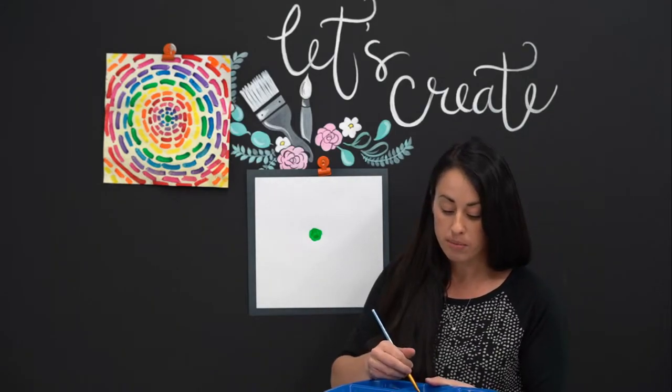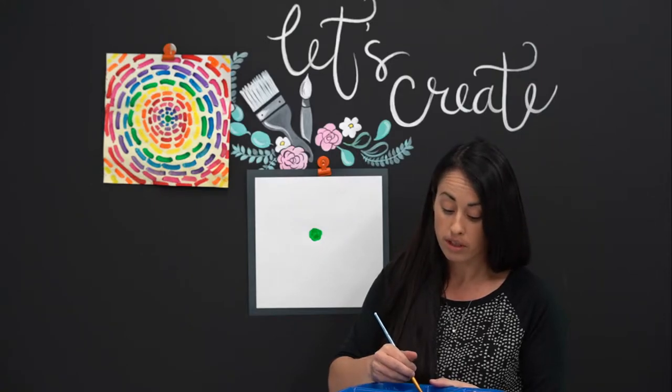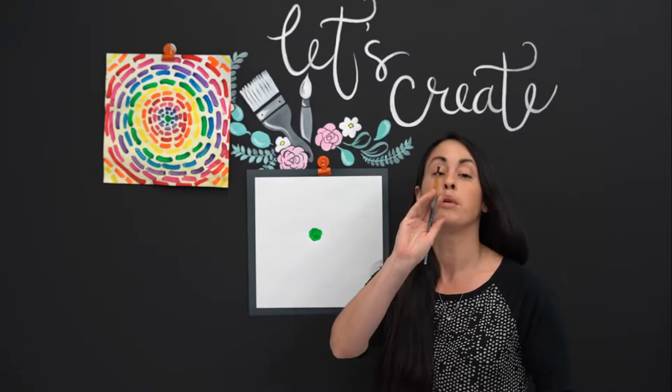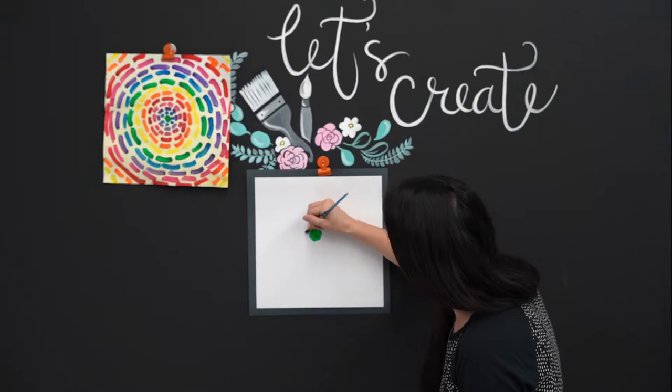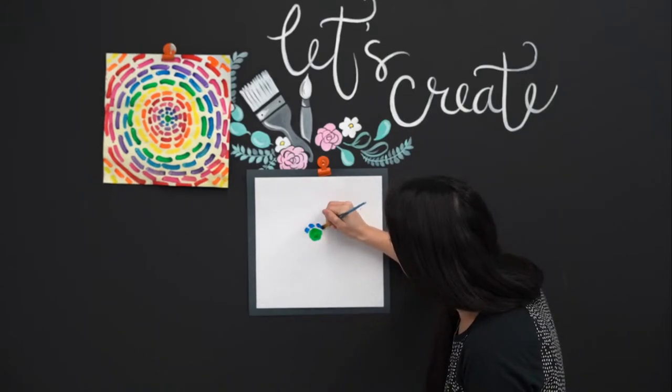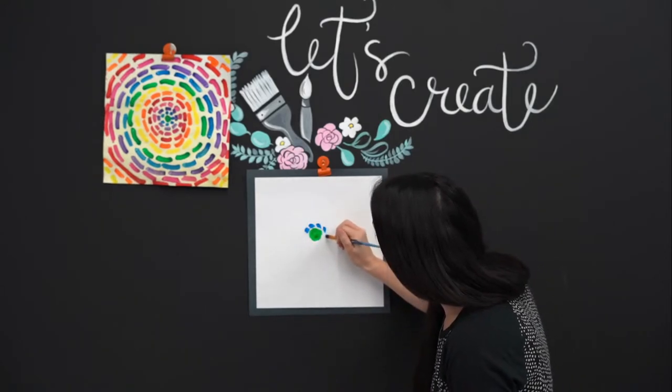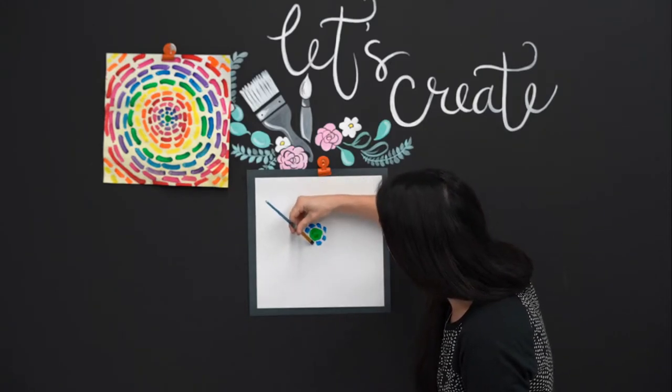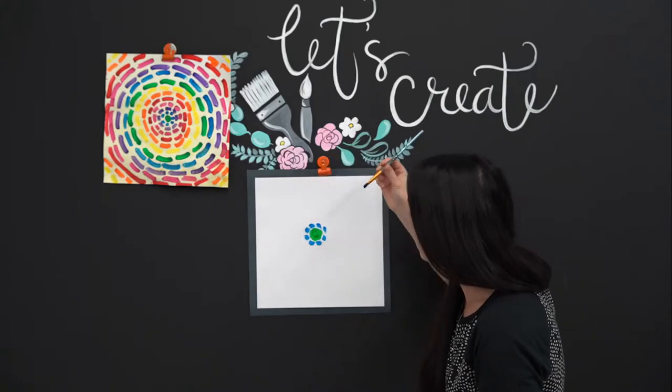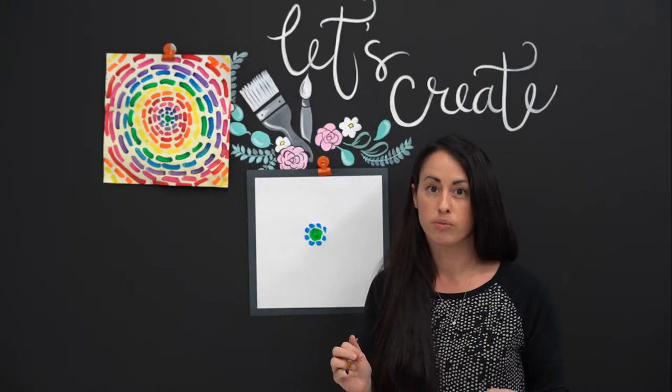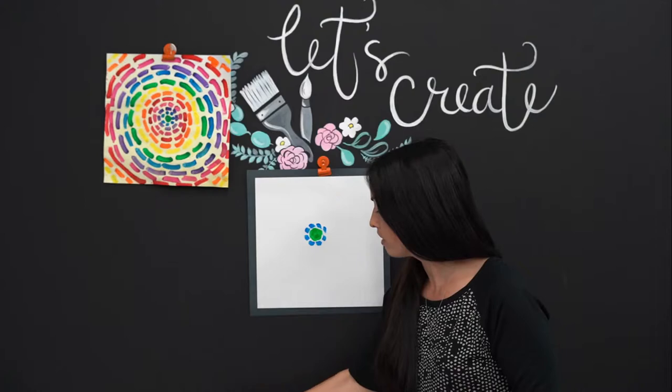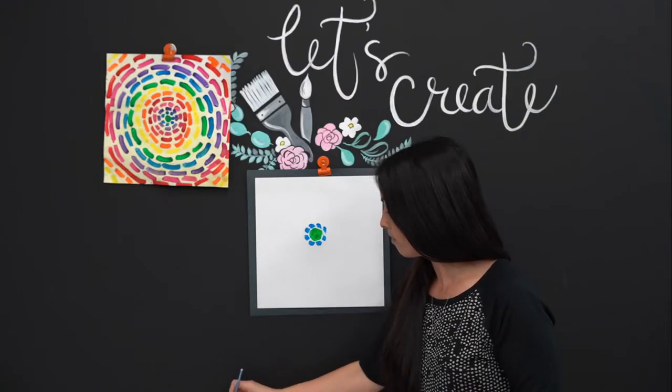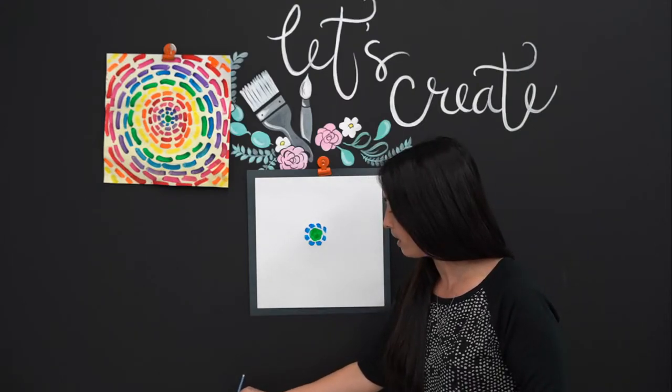Our next color is going to be a similar color to green. It's going to be blue. So we're going to be going around our circle, and your goal is to stay very close to your green, but don't touch the green. Leave a little bit of white in there too. Now your brush, and I have my water right here handy.